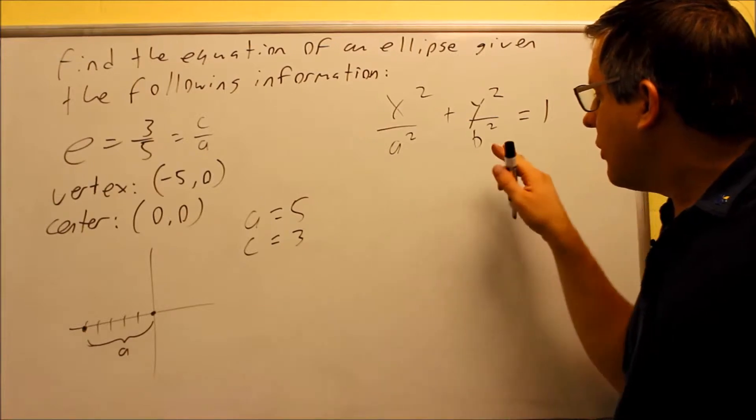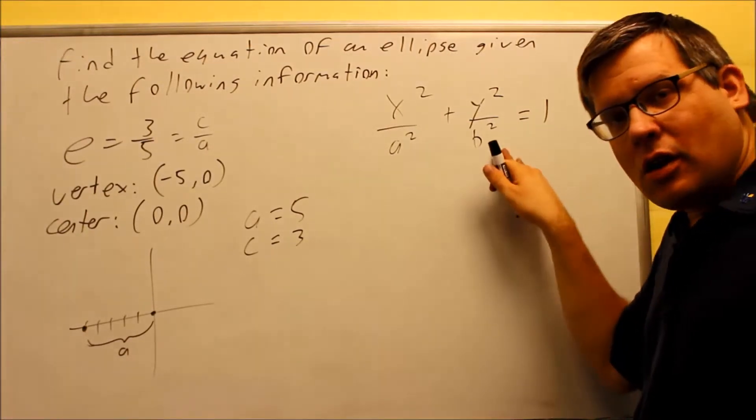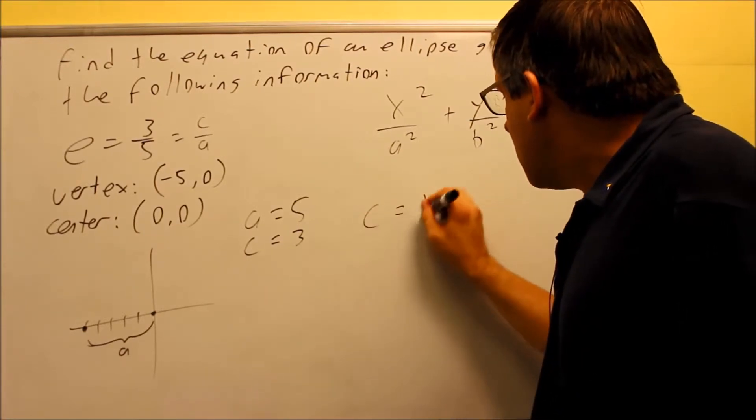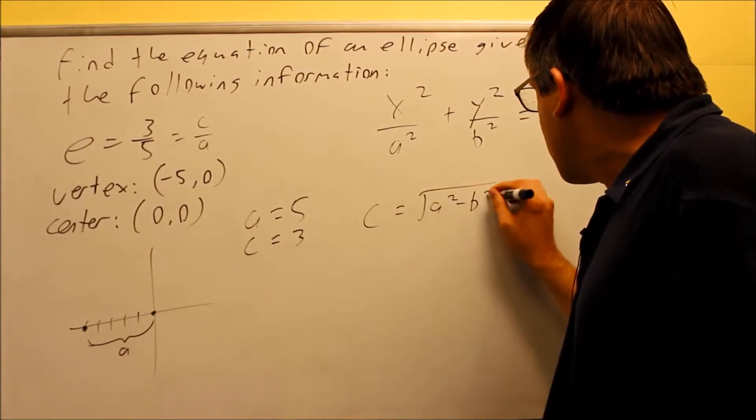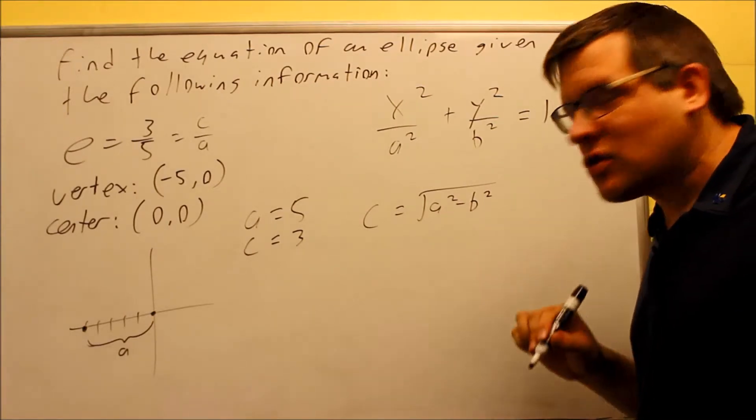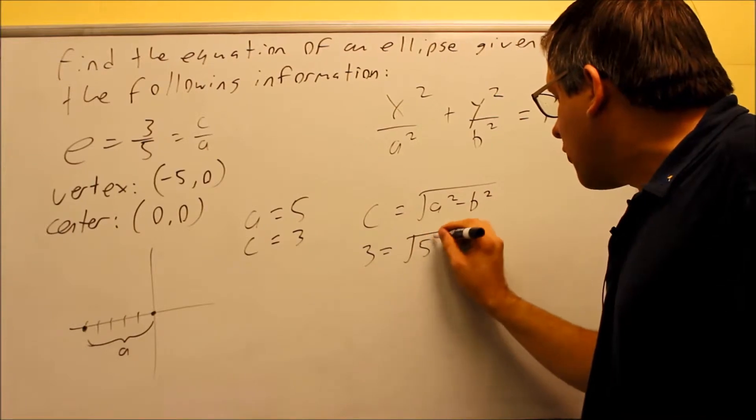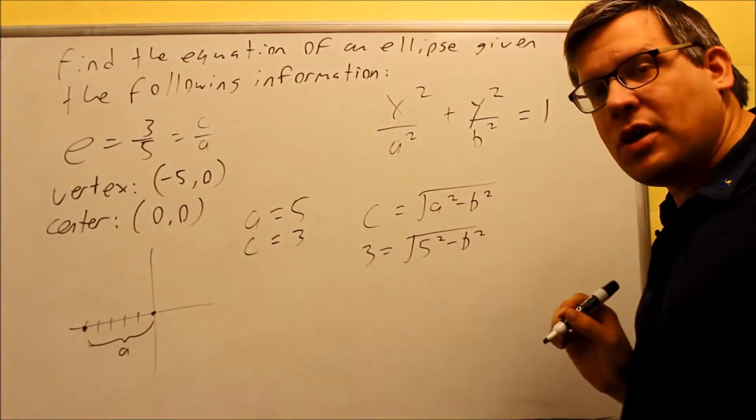I still want to find the b squared, because I have to fill that in for this particular formula. So, my c is the square root of a squared minus b squared. I'm going to do the same thing that I did for the previous example. Put in the pieces of information. c is 3, a is 5. I want to solve for b squared.